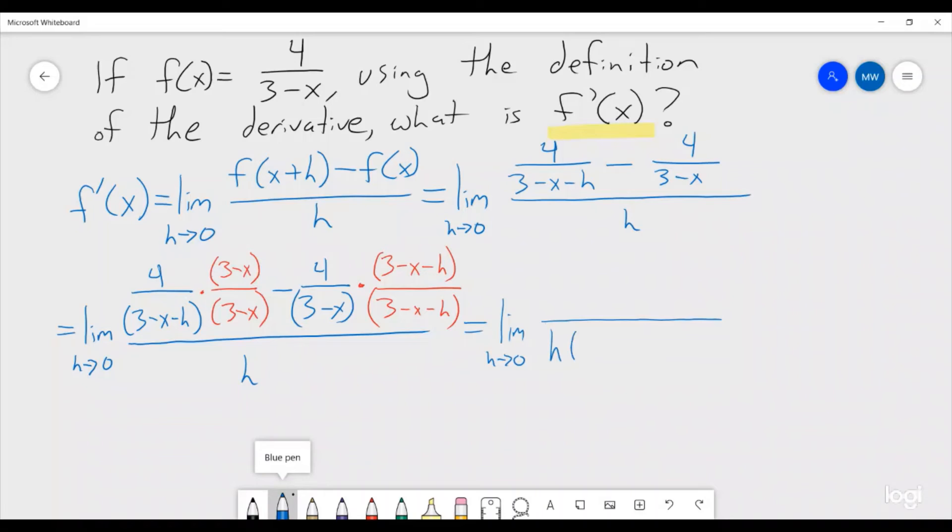So, we get h, 3 minus x, 3 minus x minus h. And then the top is going to have 4 times 3 minus x. So, that's 12 minus 4x. We have minus 4 times the other one. So, 12 minus 4x minus 4h.